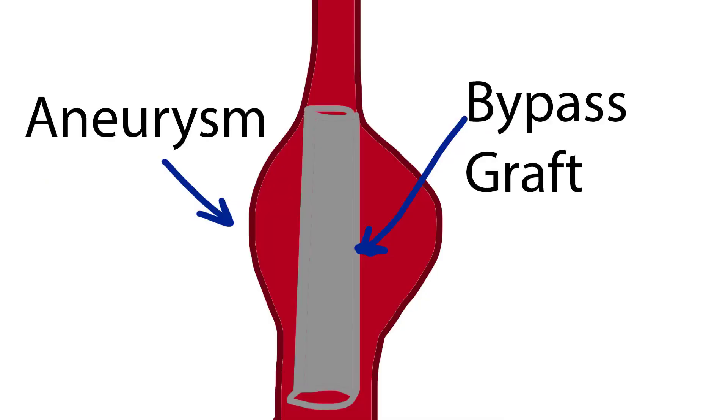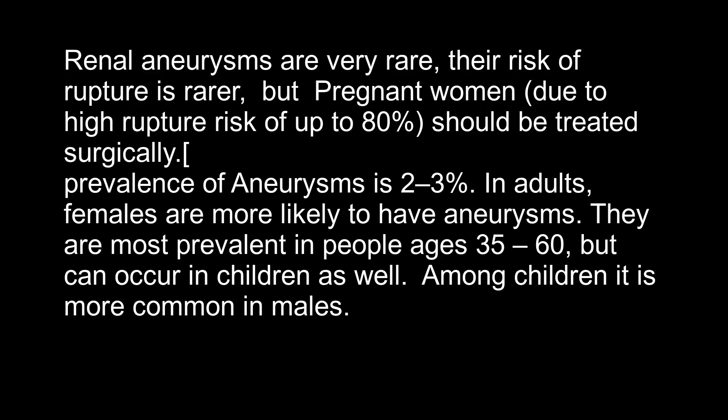For aneurysms in the aorta, arms, legs, or head, the weakened section of the vessel may be replaced by a bypass graft sutured at the vessel's stumps. Renal aneurysms are very rare and the risk of rupture is rarer, but pregnant women — due to high rupture risk of up to 80 percent — should be treated surgically.